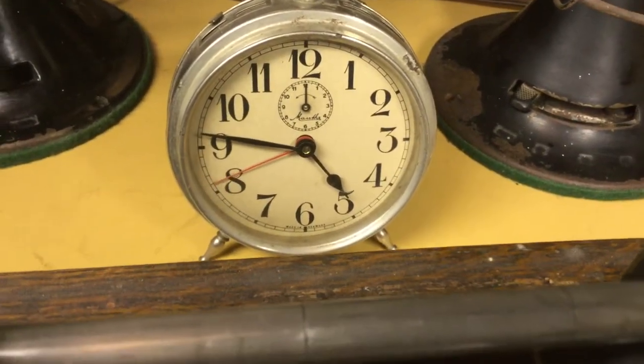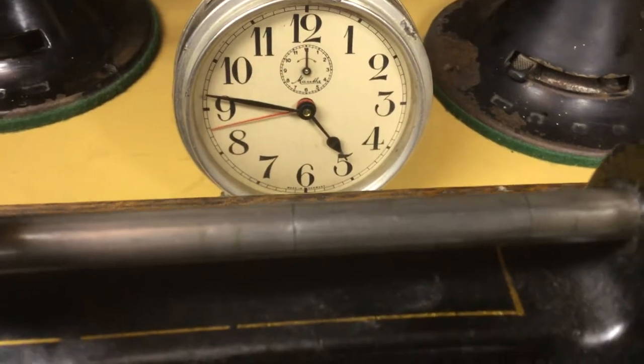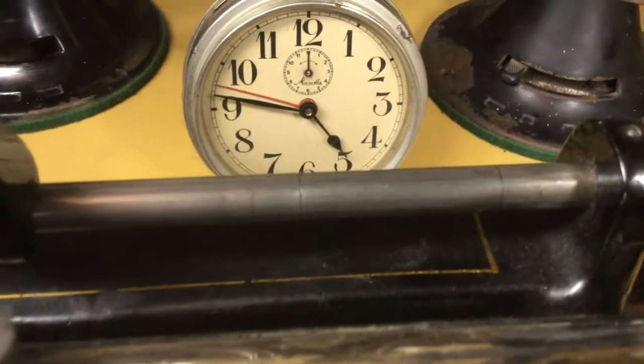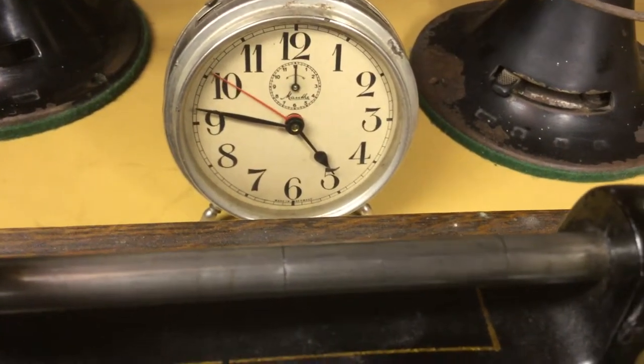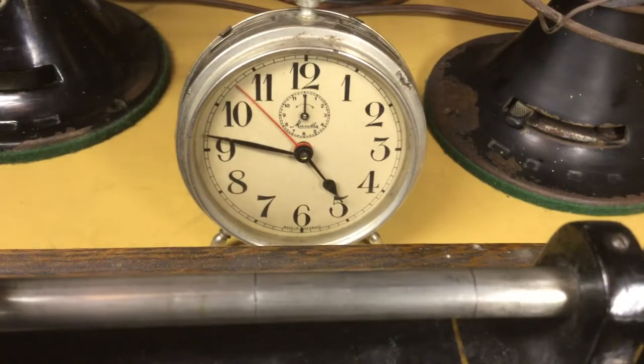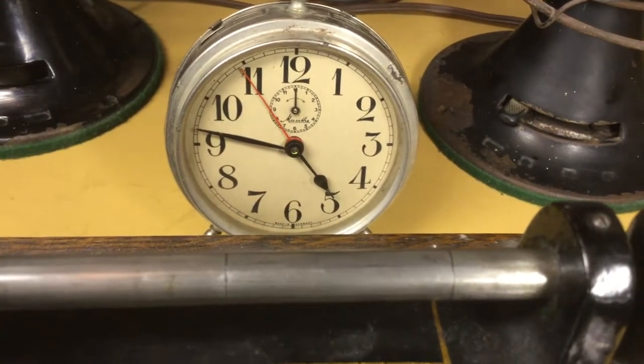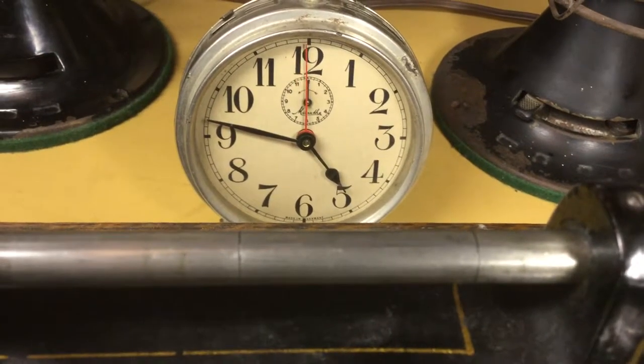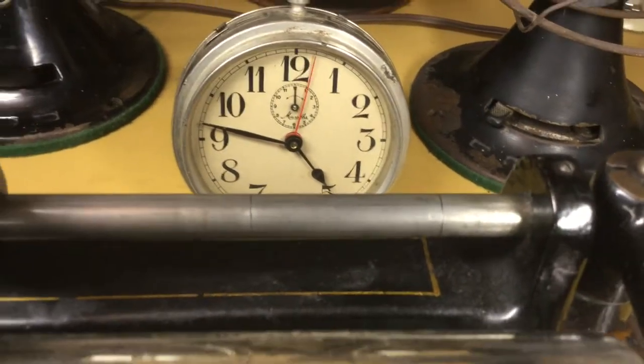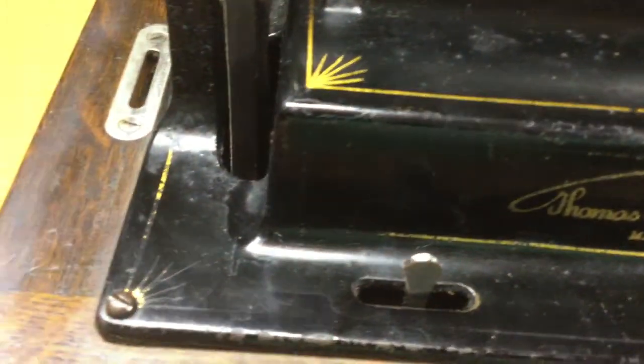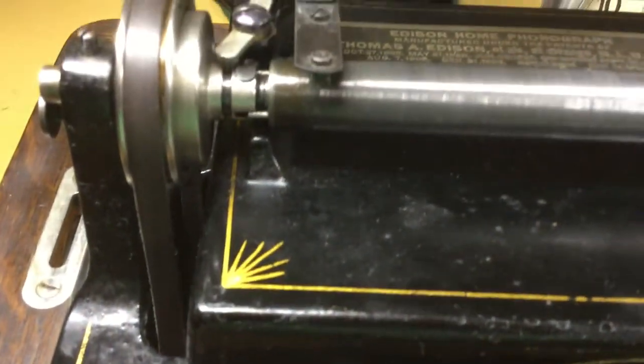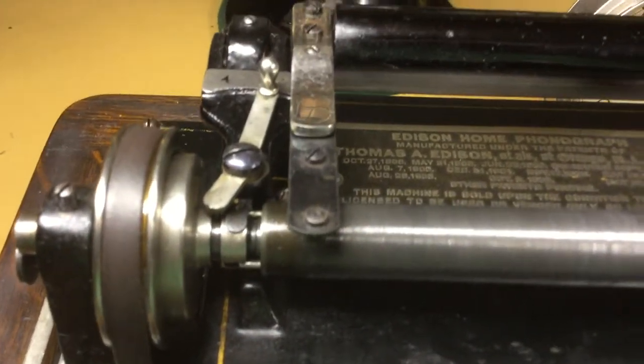On Edison machines, the model B and newer machines will have these marks engraved on the back rod. Some of the very early model B's might not. I know there's some very early banner decals standard model B's that don't have the engraved marks, but most of them will have.